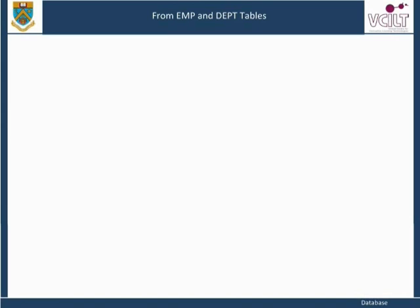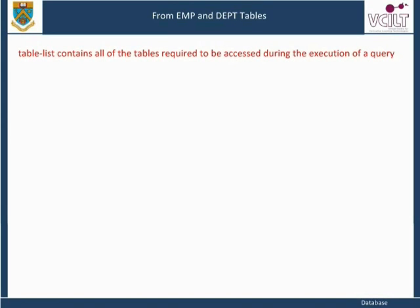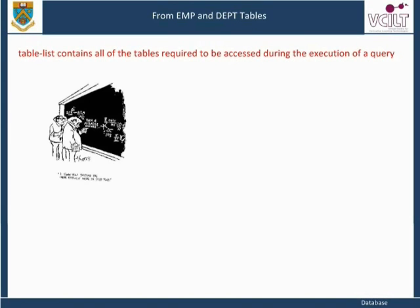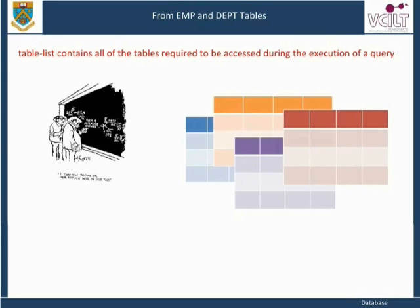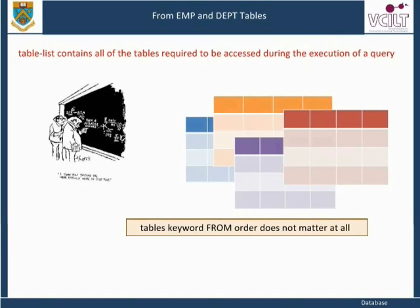In general, the table list will contain all of the tables required to be accessed during the execution of a query. Note that, from a purely logical point of view, the order in which the tables are listed after the keyword FROM does not matter at all. In practice, however, if we are dealing with larger tables, the order of tables in the table list may make a difference to the speed of execution of the query, as it may affect the order in which data from the tables is loaded into main memory from disk.